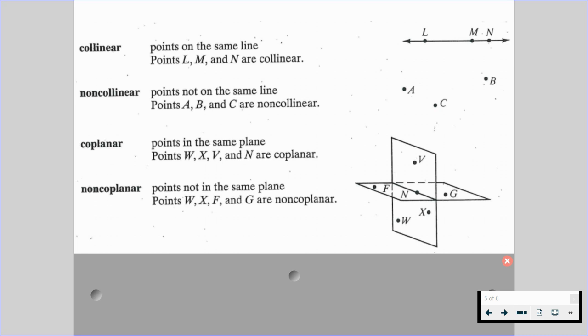Just like with collinear and non-collinear, we have coplanar and non-coplanar. Points that are not in the same plane are non-coplanar. So points W, X, F, and G are non-coplanar because they are not in the same plane. W and X are on the same plane. F and G are on the same plane. But when we put all four points together in one statement, those are non-coplanar.